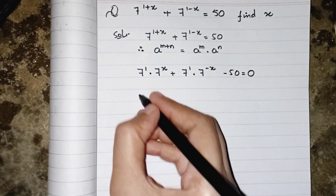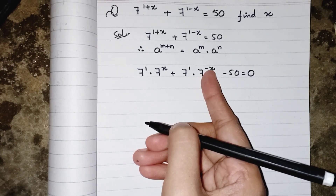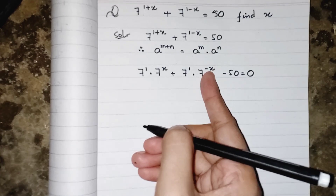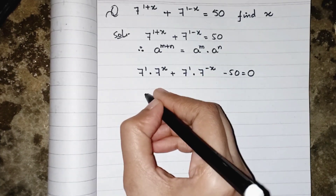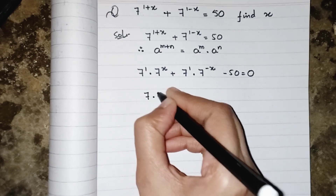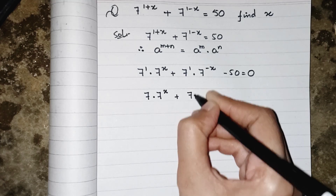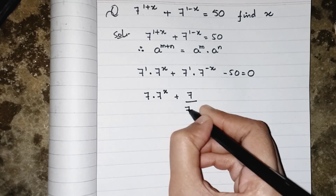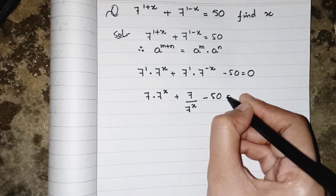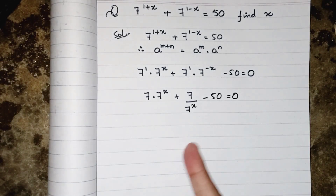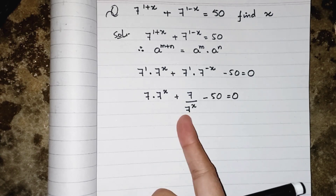As we know, whenever we have negative exponents we always write it with the positive one to make it positive. We move 7^(-x) from the numerator to the denominator, so it will be written as 7 upon 7^x, giving us 7·7^x + 7/7^x minus 50 equals to 0.